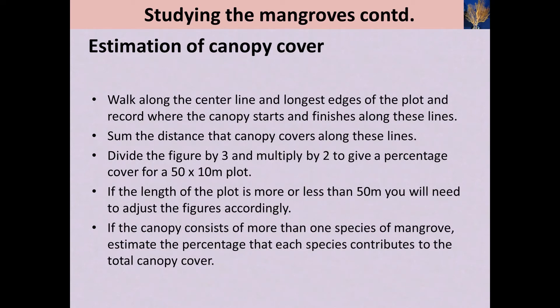This is the method of estimation of the canopy cover of the mangrove forest. First, you should work along the center line and longest edges of the plot, and record where the canopy starts and finishes along this line. Then get the sum of the distances that the canopy covers along this line, divide the figure by 3, and multiply by 2 to give percentage cover for a 50 by 10 meter plot. If the length of the plot is more or less than 50 meters, you will need to adjust the figures accordingly.